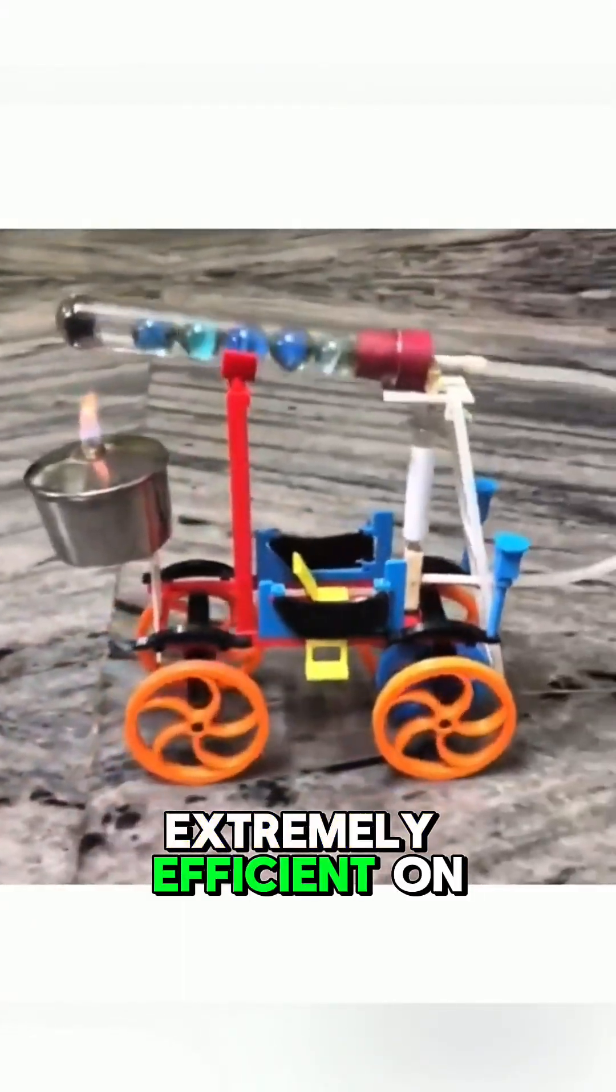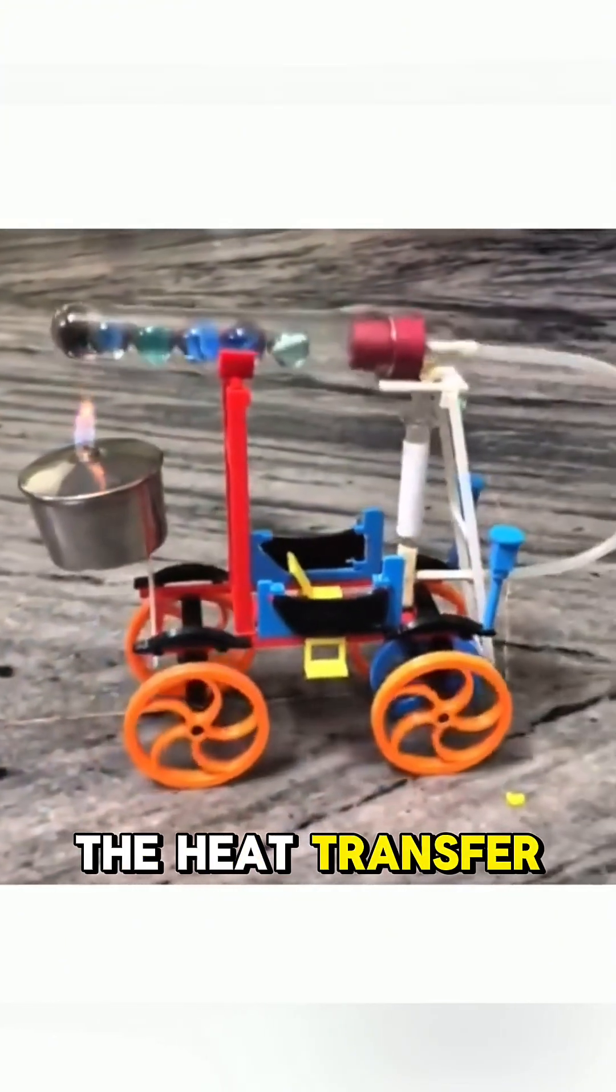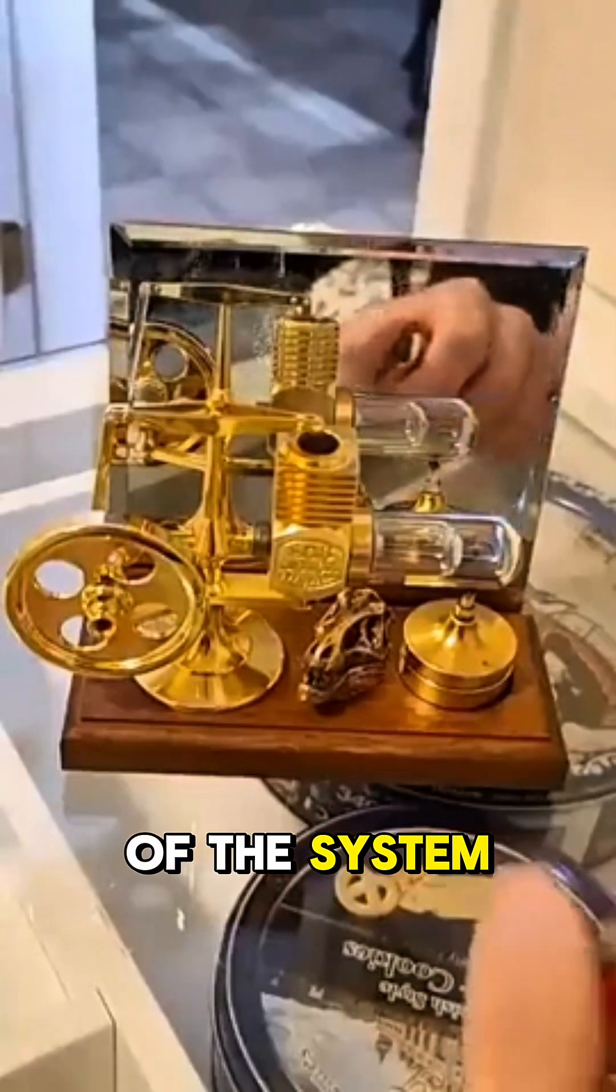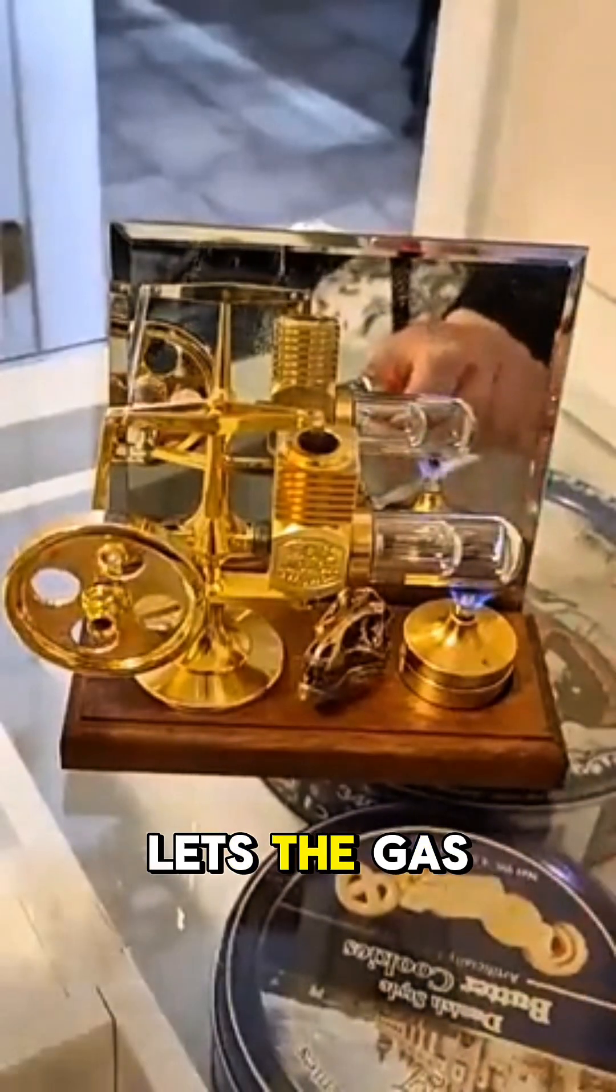Stirling engines are extremely efficient on paper but have quite some challenges in the practical world. The heat transfer is relatively slow, becoming slower at higher temperatures. The gas inside of the system generates a lot of pressure which can break the seal of the engine and let the gas escape.